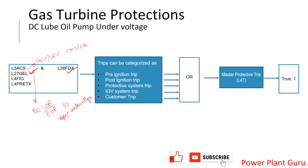EOP healthiness from the electrical system is being checked. For some of the latest machines, EOP is given a start command and it runs for around 30 seconds, with a health check including pressure and other parameters. For older machines, only GT MCC under-voltage was checked. You may find either of these combinations in your plant — both are ways to ensure the machine's emergency oil system is healthy before starting.